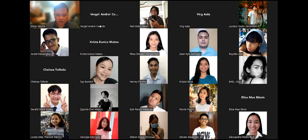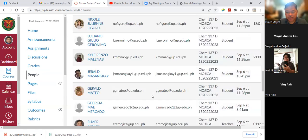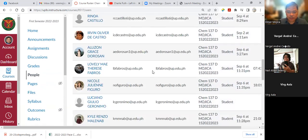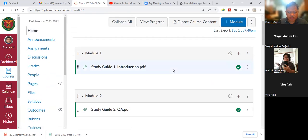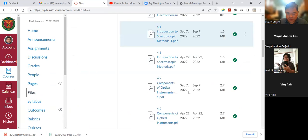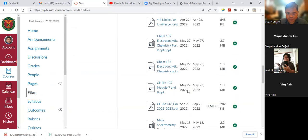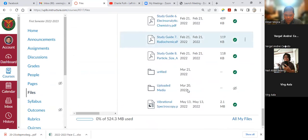I already sent the invites for the LMS we're going to use. The one we're using is Canvas. If I'm not mistaken, all of you have accepted the invites. This is how it looks like—Home. I'm starting to put the materials in the invites, and the one we're going to discuss today is the first guide. I just uploaded it today.